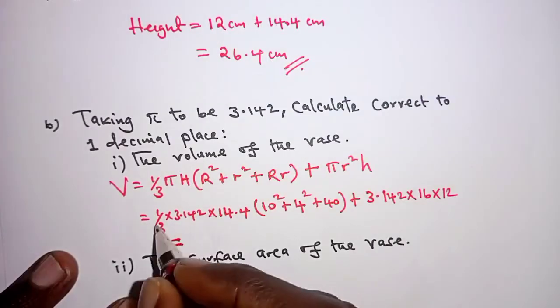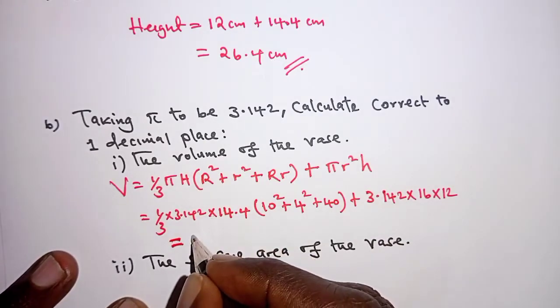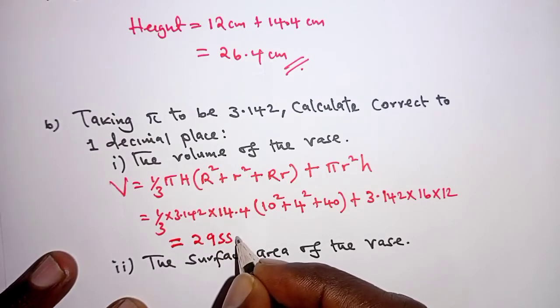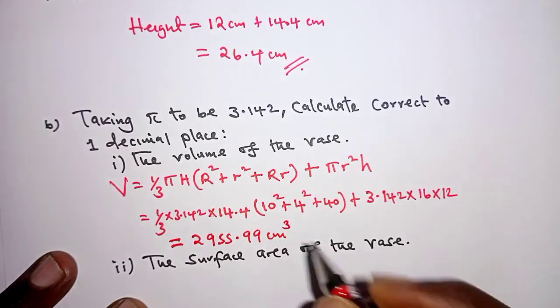Okay, working out all these, we'll have to get 2955.99 cubic centimeters,